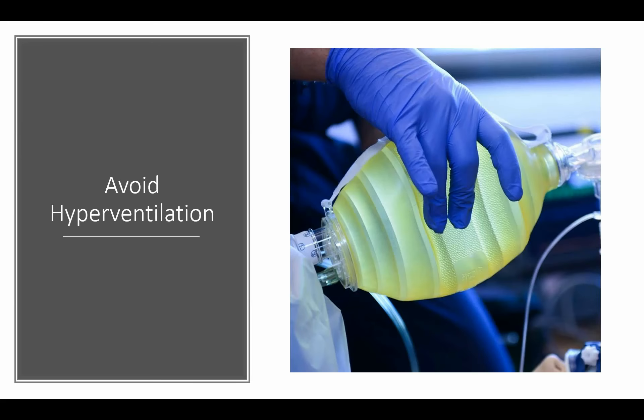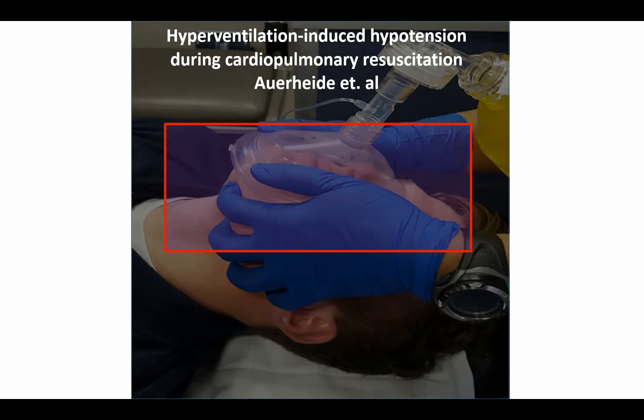Our next high performance CPR metric is to avoid hyperventilation. This is generally a major issue — people tend to squeeze the bag too hard and too fast. From reviewing CodeStat reports, everyone here is generally ventilating between 8 to 10 times a minute, sometimes slightly faster or slower. What I recommend is that if the patient has an advanced airway and you're providing asynchronous ventilation, squeeze the bag about once every 10th to 12th compression to help prevent hyperventilation. Hyperventilation is deadly. You can perform the best CPR, defibrillate, give pressors, do everything right — but if you hyperventilate the patient, they will not survive.